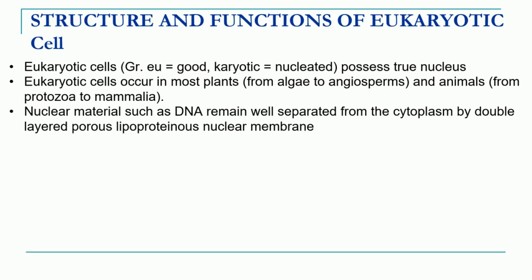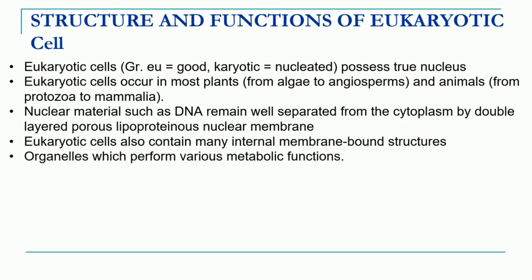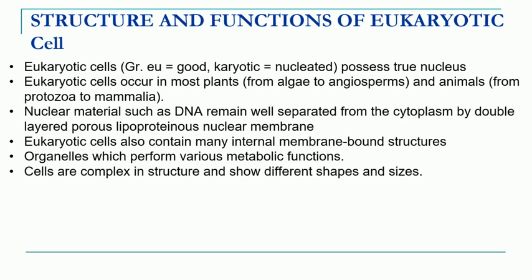Since these cells possess the nucleus, the genetic material which is in the form of DNA remains well separated from the cytoplasm and it is covered by a double-layered lipoproteinous nuclear membrane. So, DNA is present inside the nucleus which is covered by a nuclear membrane. These eukaryotic cells contain many membrane-bound structures called organelles, which perform different metabolic functions within the cell. They are much more complex in structure, show different shapes and sizes, and are larger than 10 micrometers, compared to prokaryotic cells which are less than 10 micrometers.